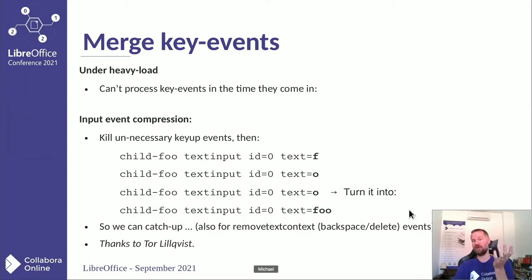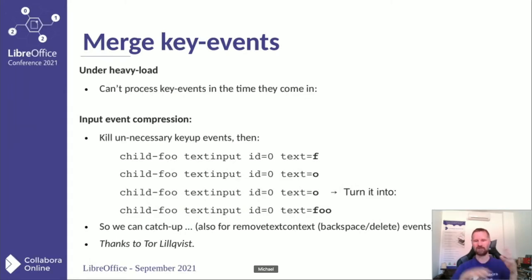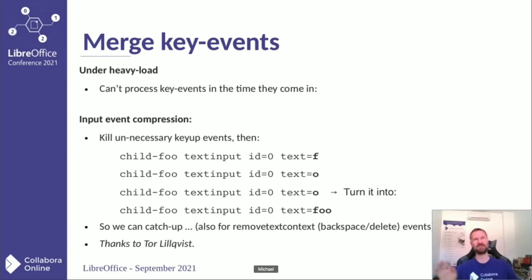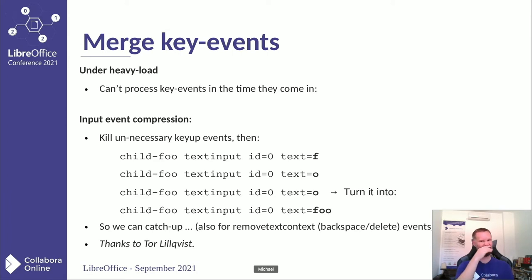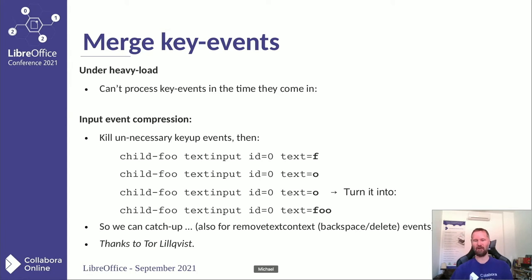On heavy load, you can't process key events quickly enough. Tor did great work to merge multiple identical inputs into a single input, collapsing the backlog. When inserting text, a lot of work is done in the document on each keystroke and context switch. We can now catch up much more effectively. Similarly for text removal (backspace/delete), merging those events together. It would also be nice to merge insert and delete events into each other to further shrink the input queue.